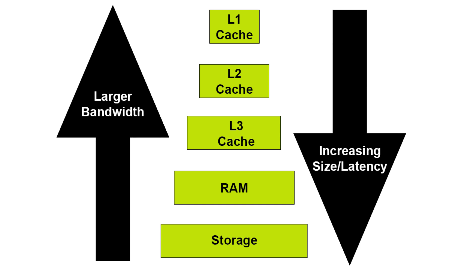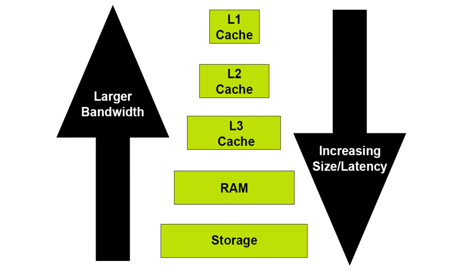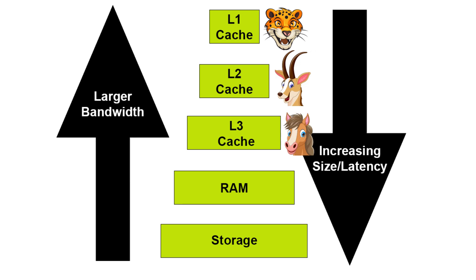Cache is much smaller than RAM in size. Common examples would be a Level 3 cache of 16 megabytes, 32 megabytes, or even 96 megabytes, whereas RAM is much larger — common setups have 16 gigabytes, 32 gigabytes, or even 64 gigabytes of RAM. Level 1 cache is the smallest but also the fastest and most efficient in communicating with the CPU. Level 2 is the mid-sized cache with moderate speed, and Level 3 is the largest but slowest of the three caches.